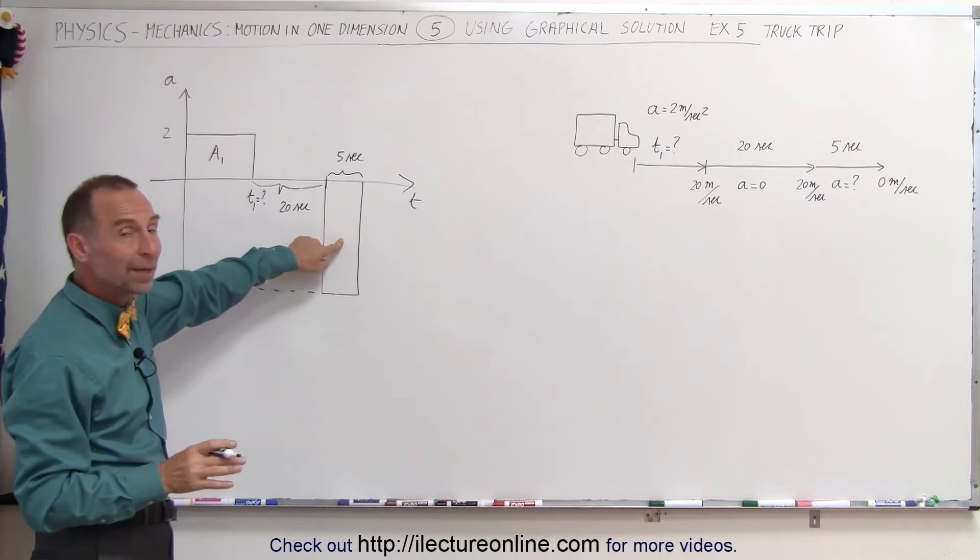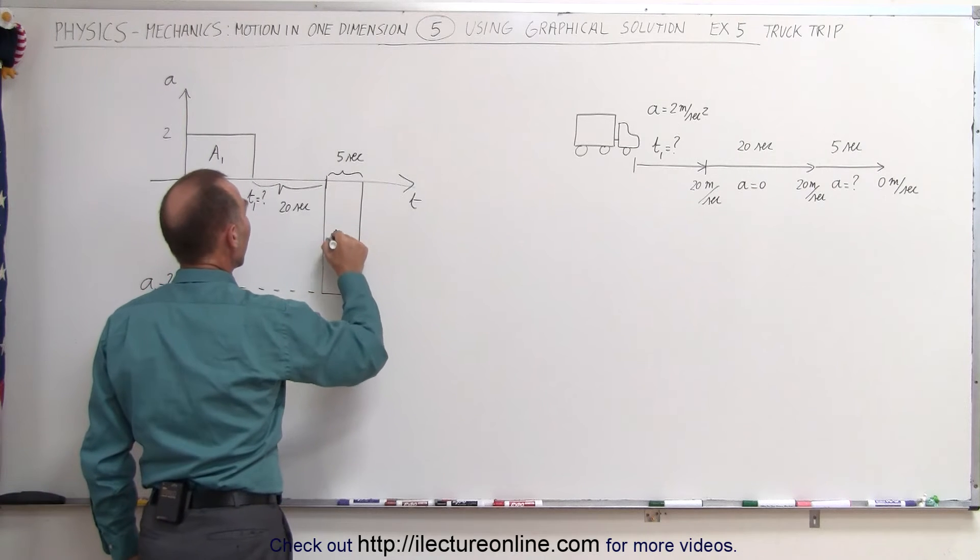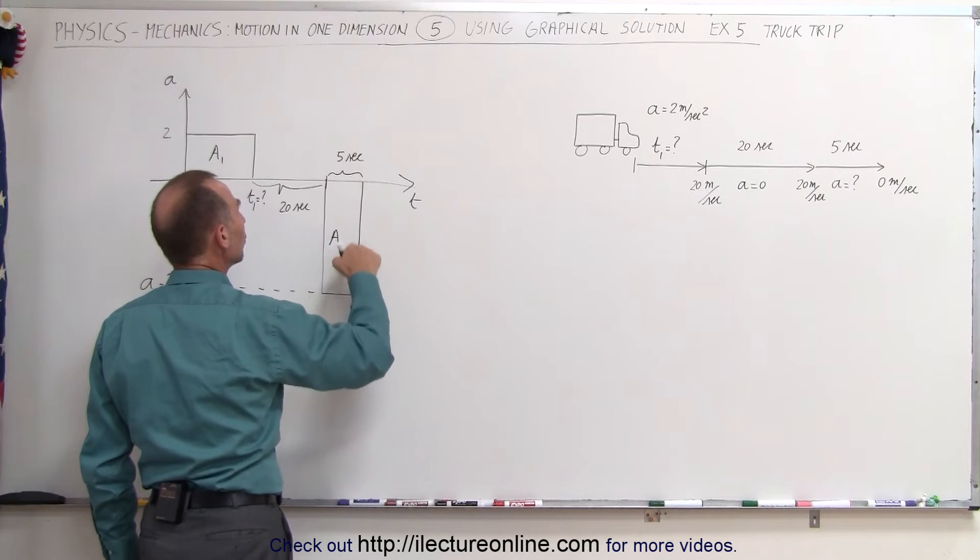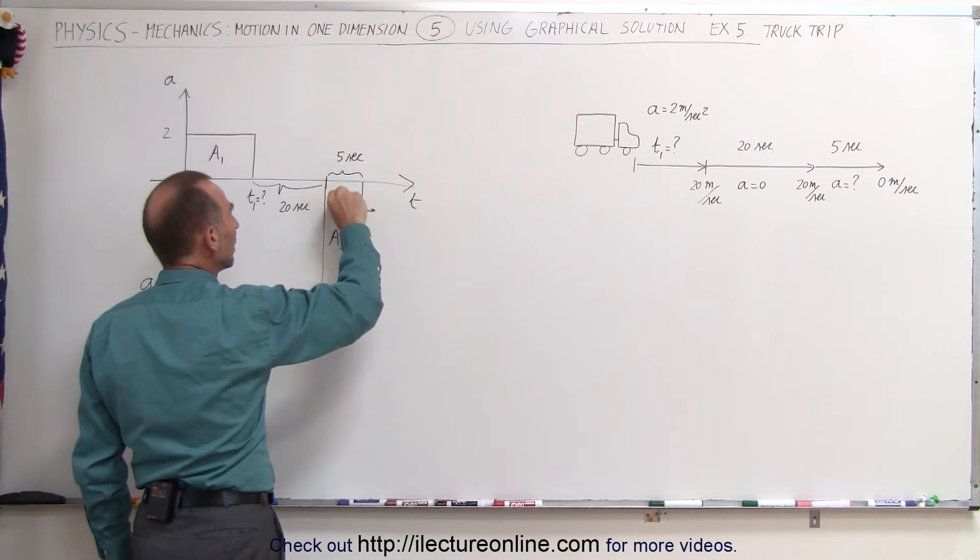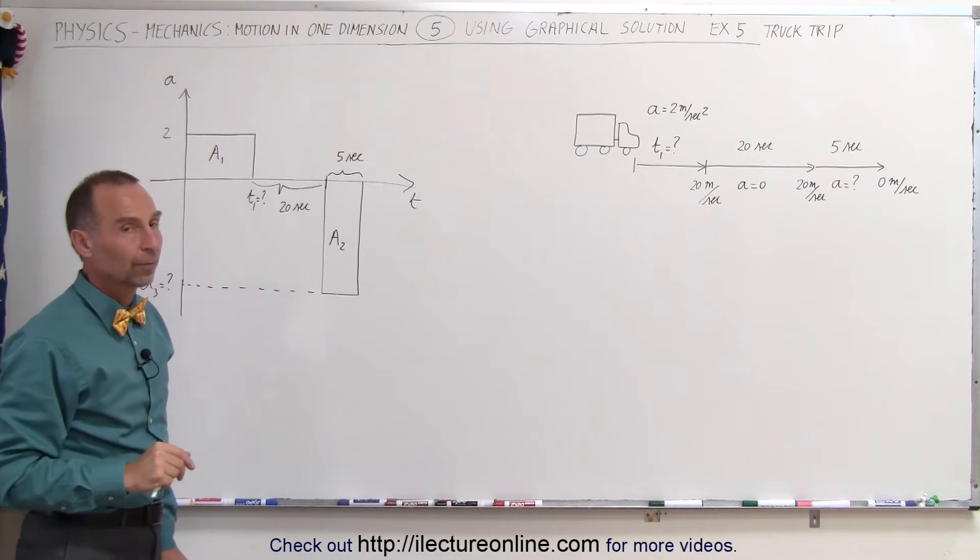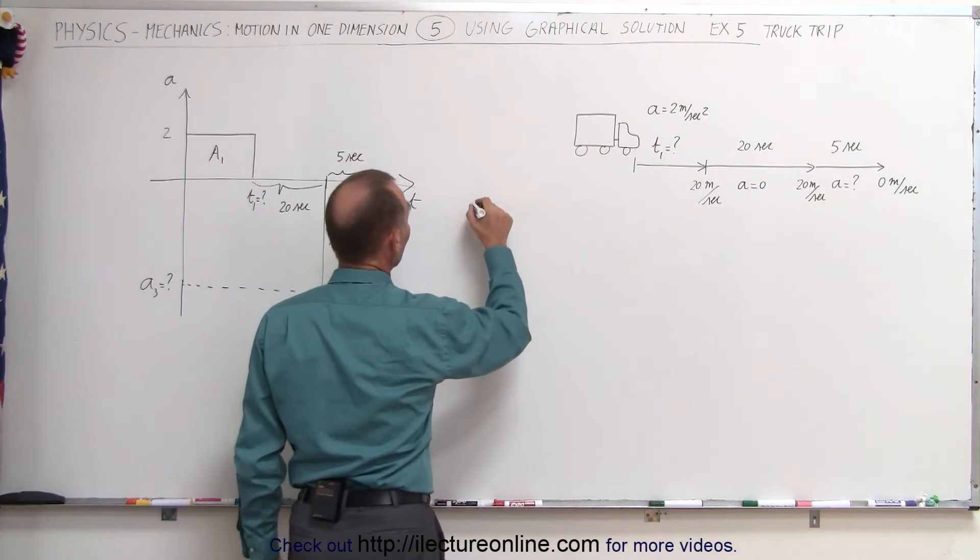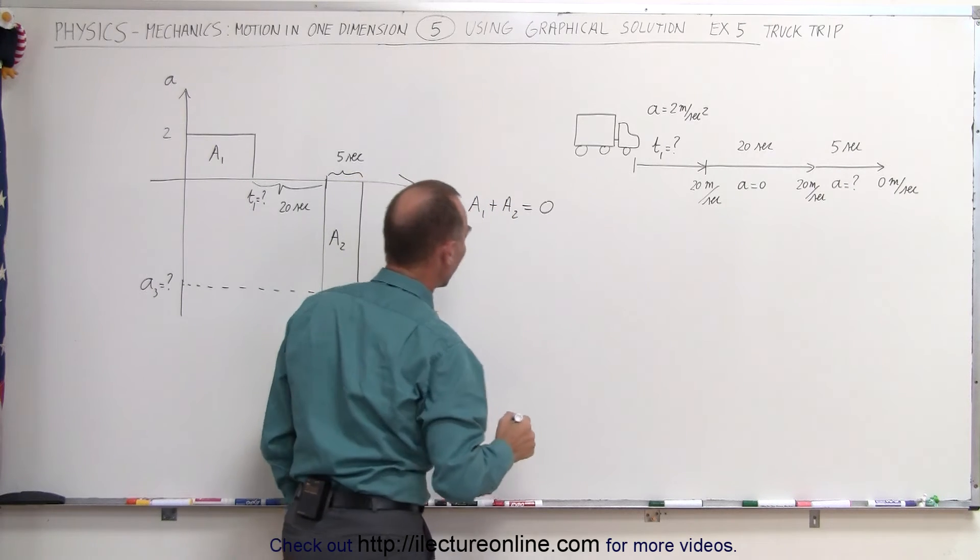And this area here should be a negative 20 meters per second. So this is a2 and that should equal negative 20 because the velocity goes back to zero when we're done with the end of the five seconds. So what we can say then in this case is that the sum of a1 plus a2 must equal 0.